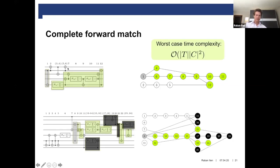The forward matching goes through the circuit until we end up with a full forward match. The stuff marked green is matched with the stuff marked green in the circuit — these are all the gates that cannot be commuted to the left of the initial match. This matching process is quite efficient: it runs in quadratic time in the circuit size.